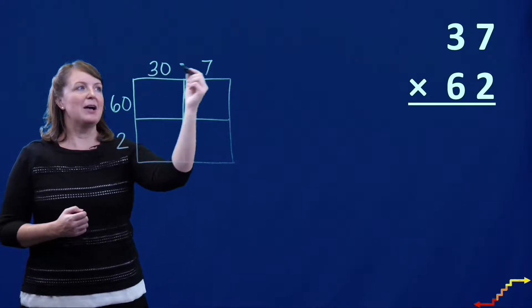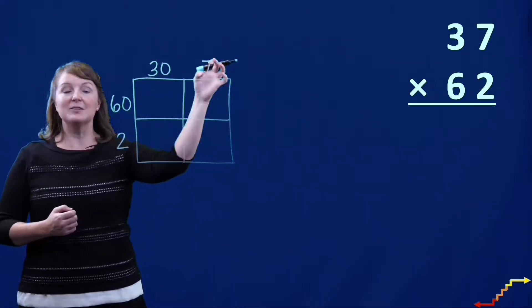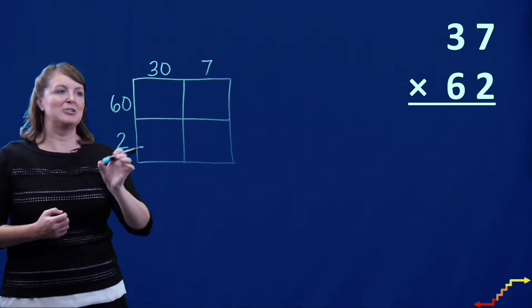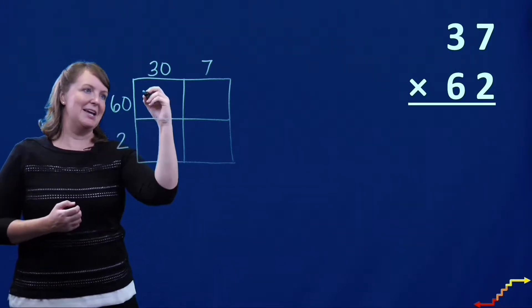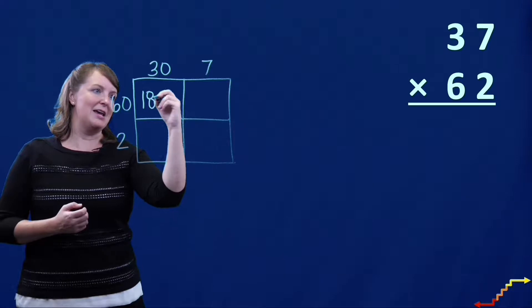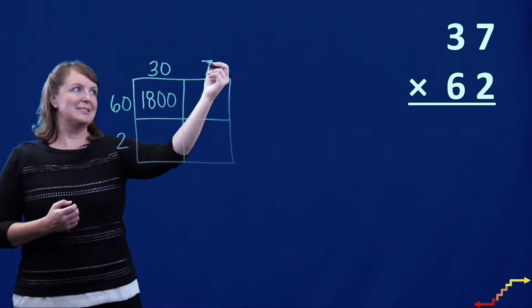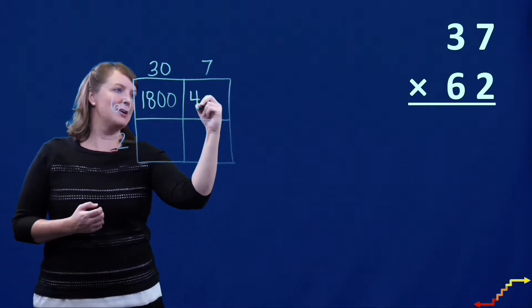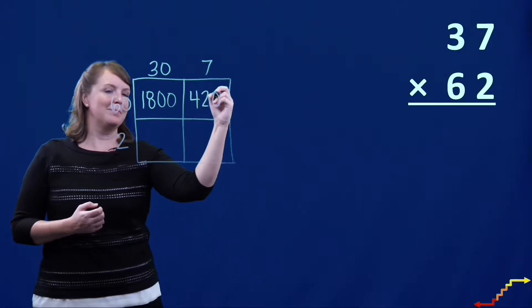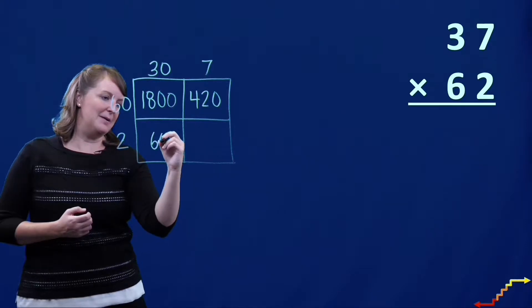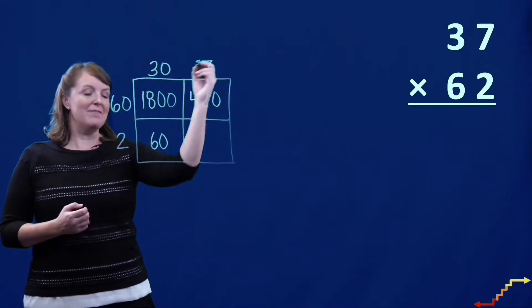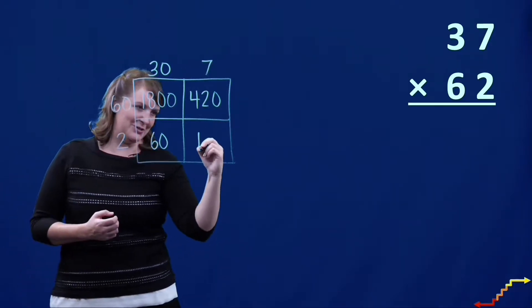Now we're going to multiply each of these parts of these factors by the factors over here. So let's start right here. 30 times 60 is 1,800. 7 times 60 is 420. 30 times 2 is 60. And 7 times 2 is 14.